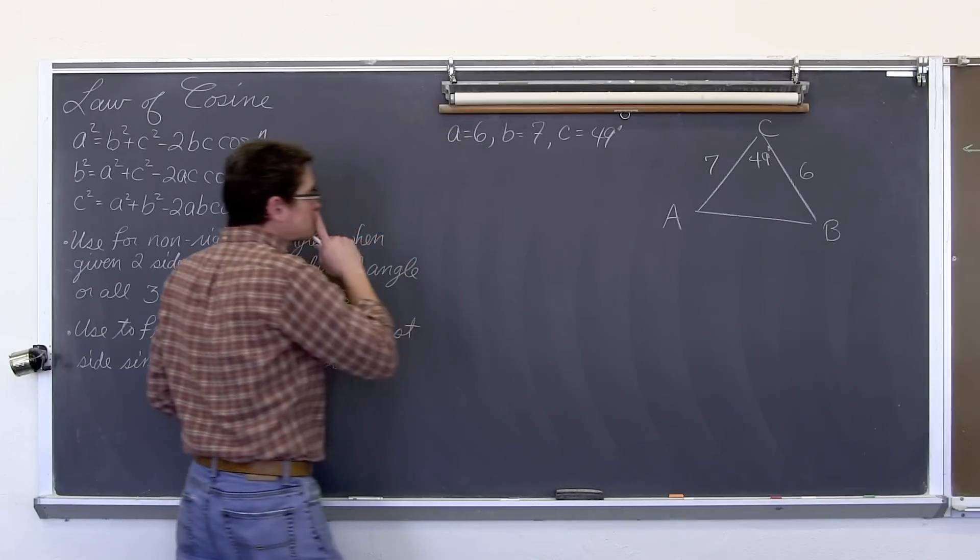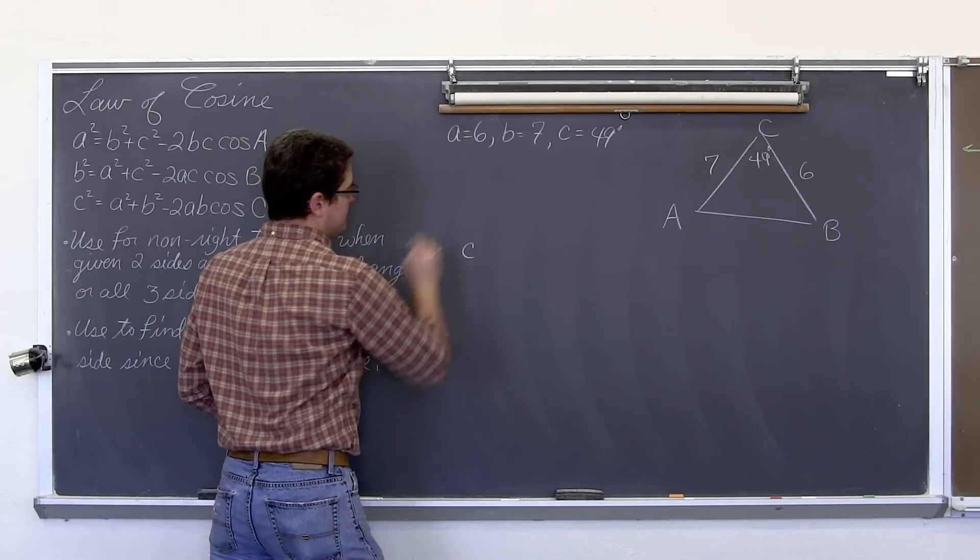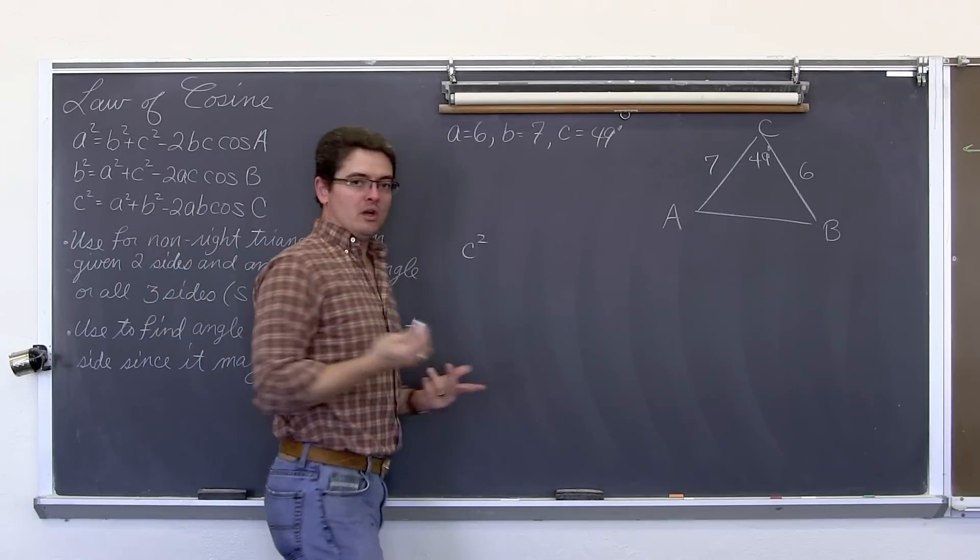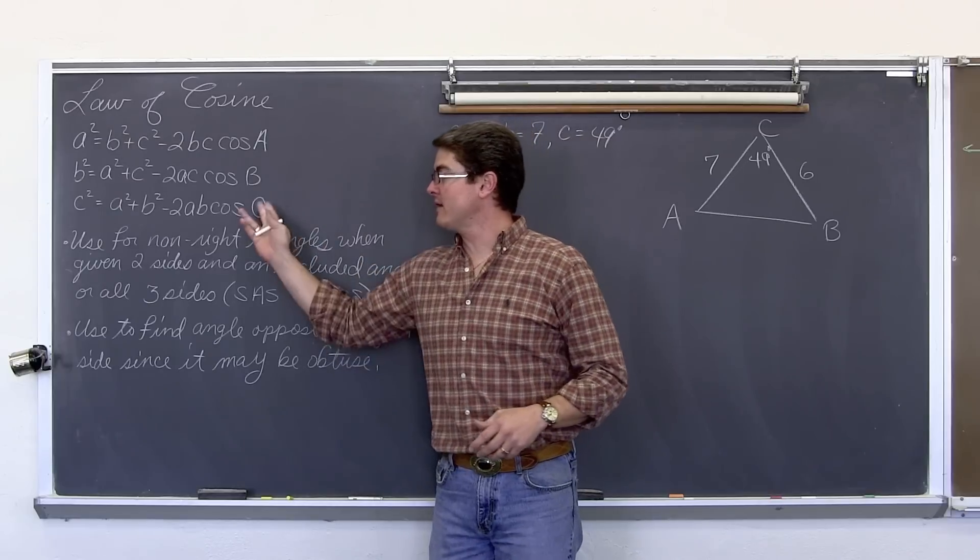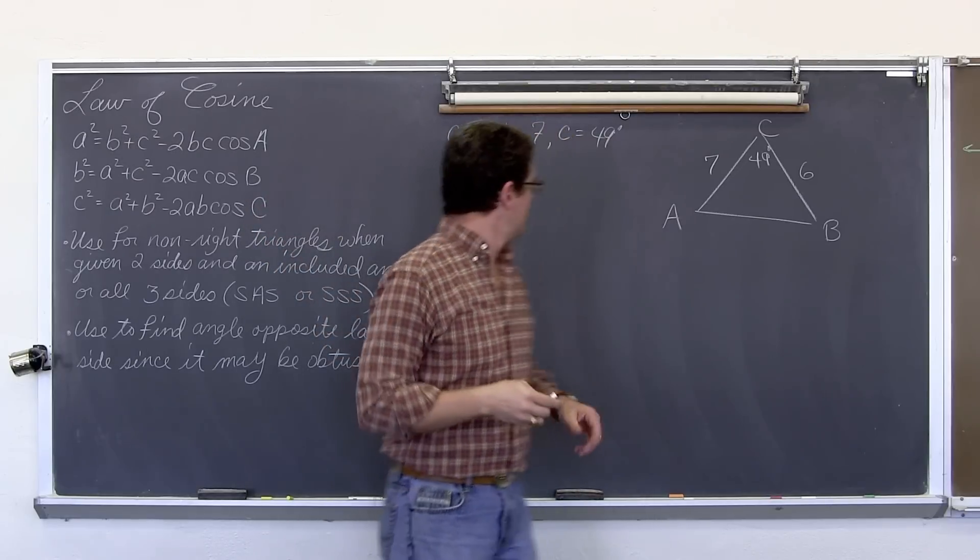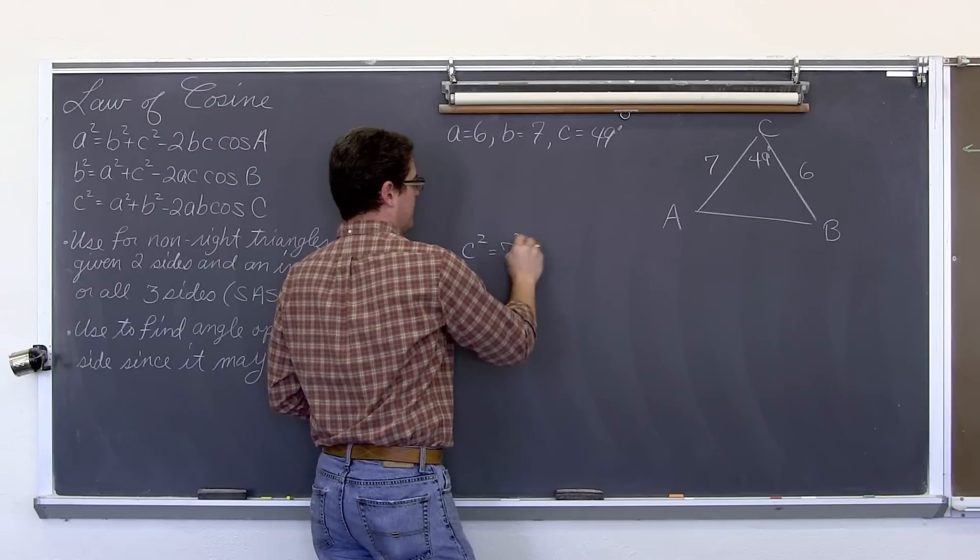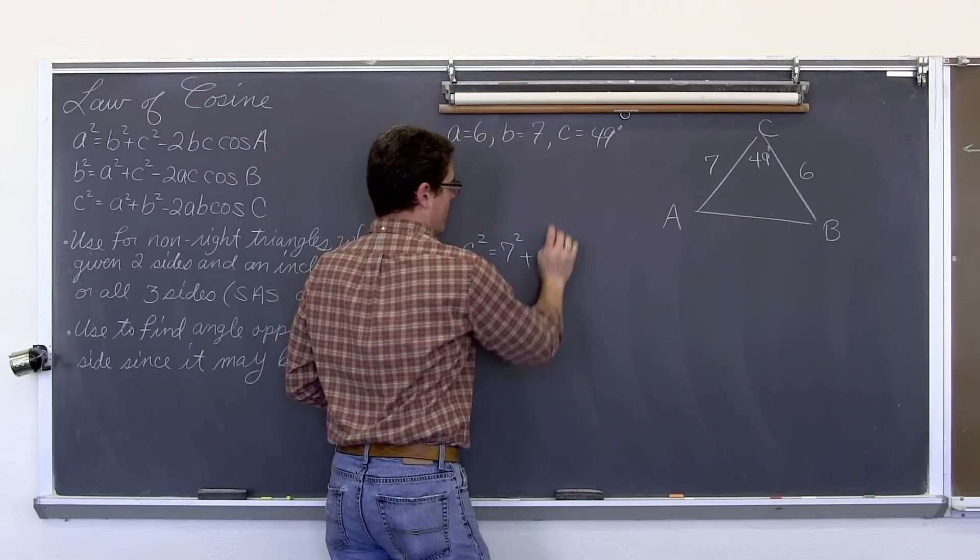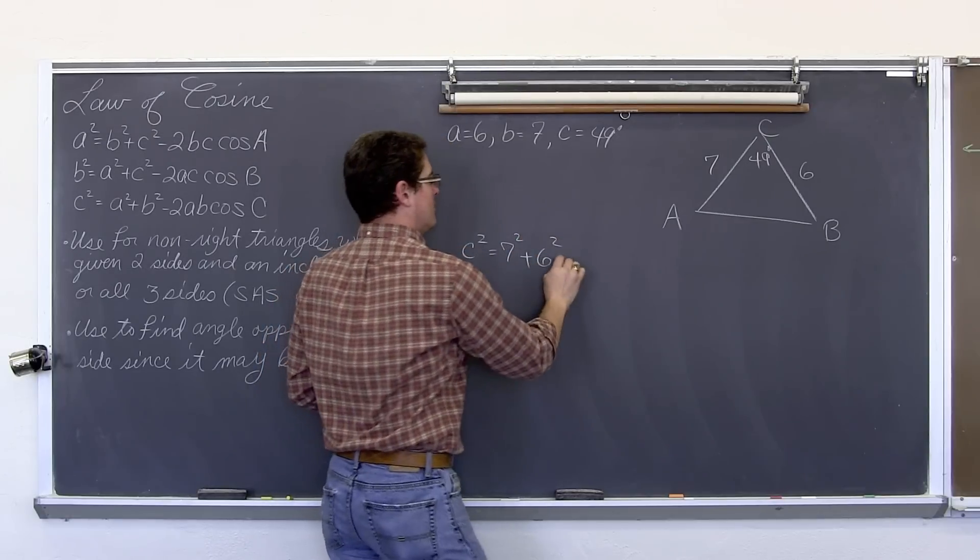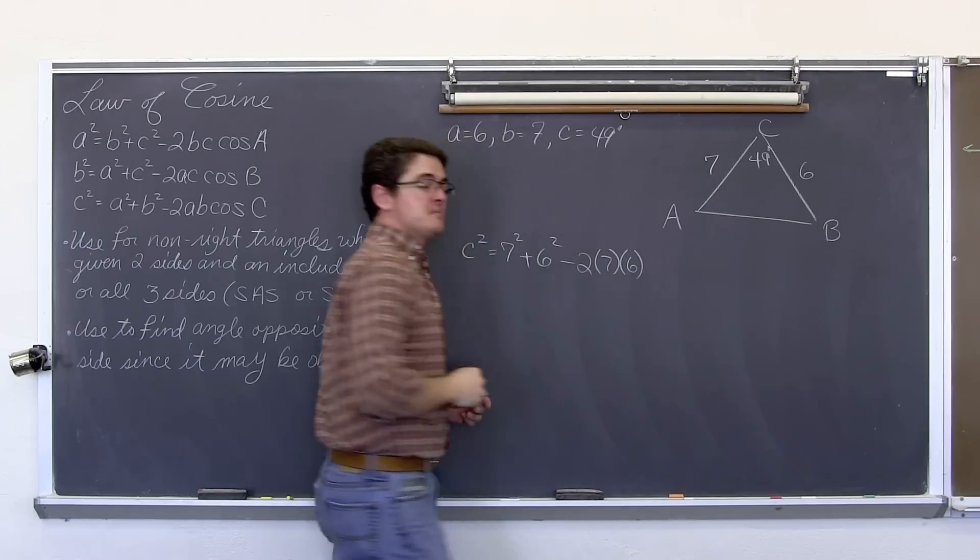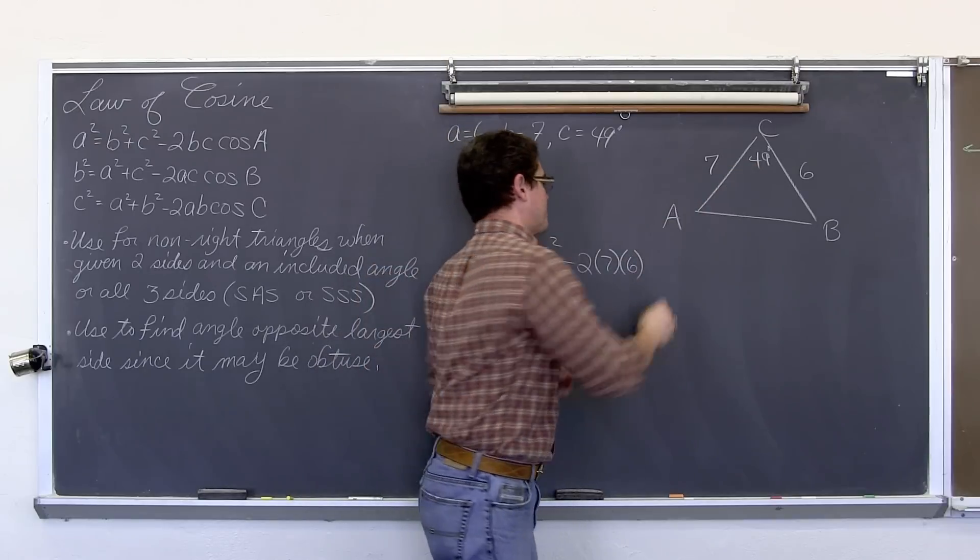So that being said, let's set that up. So sine C squared, we are working on this one if you want to actually look at the letters exactly where they should be in the formula. C squared is equal to seven squared plus six squared minus two times seven times six times the cosine at the included angle, which is 49 degrees.